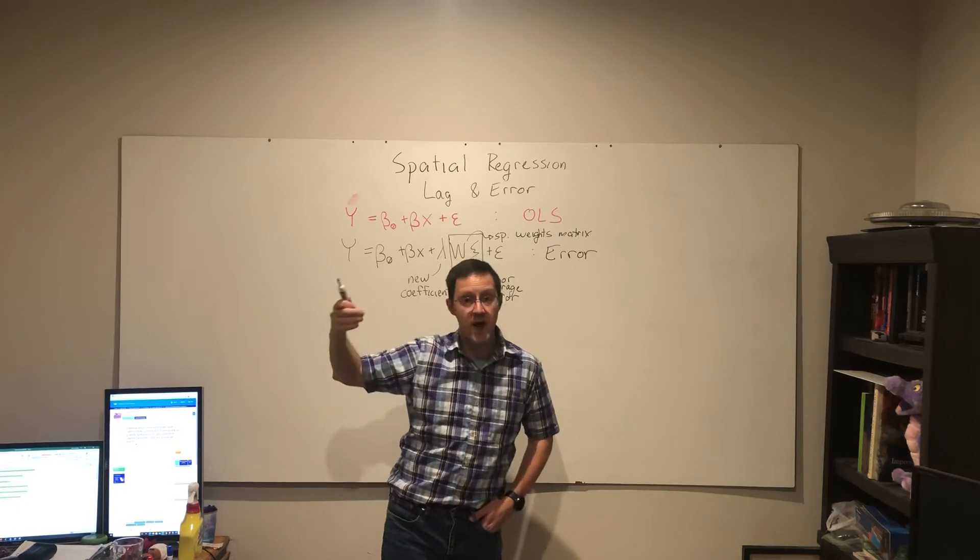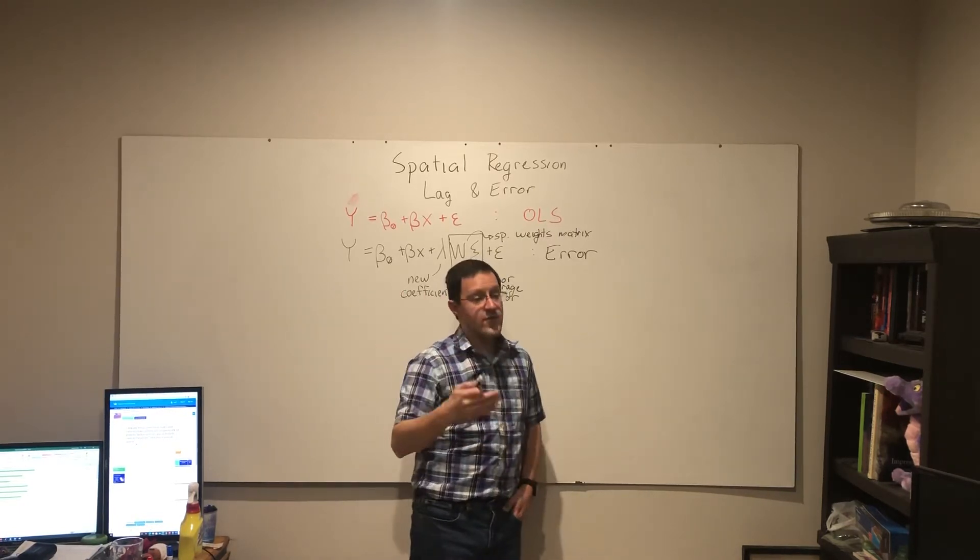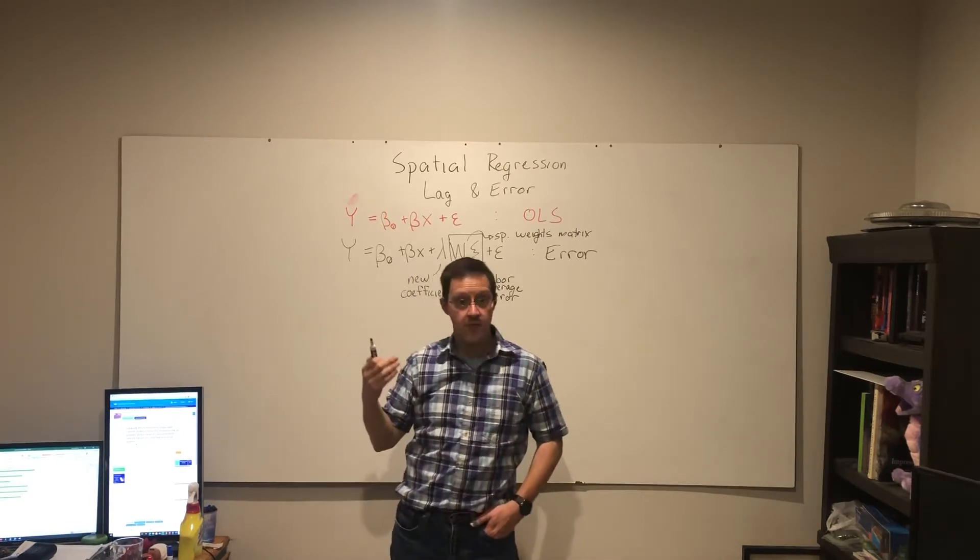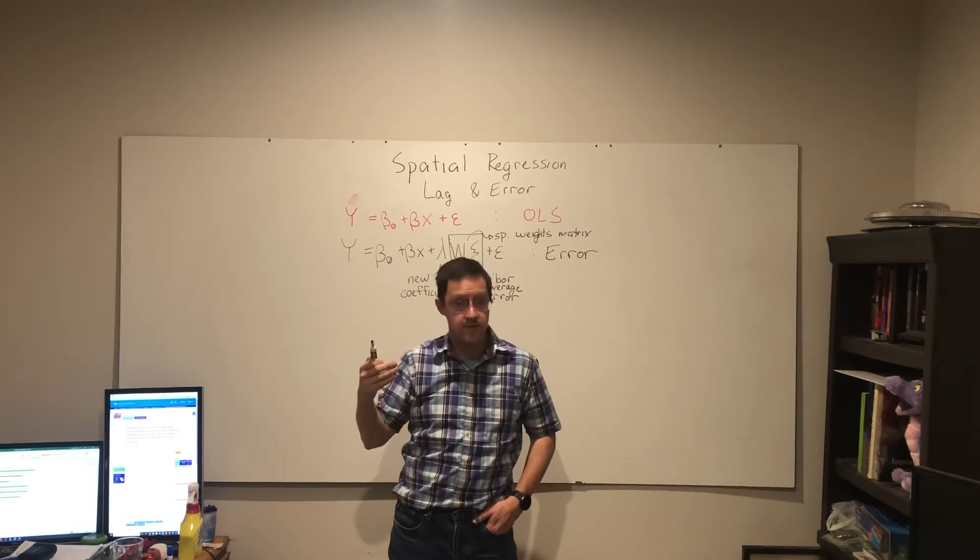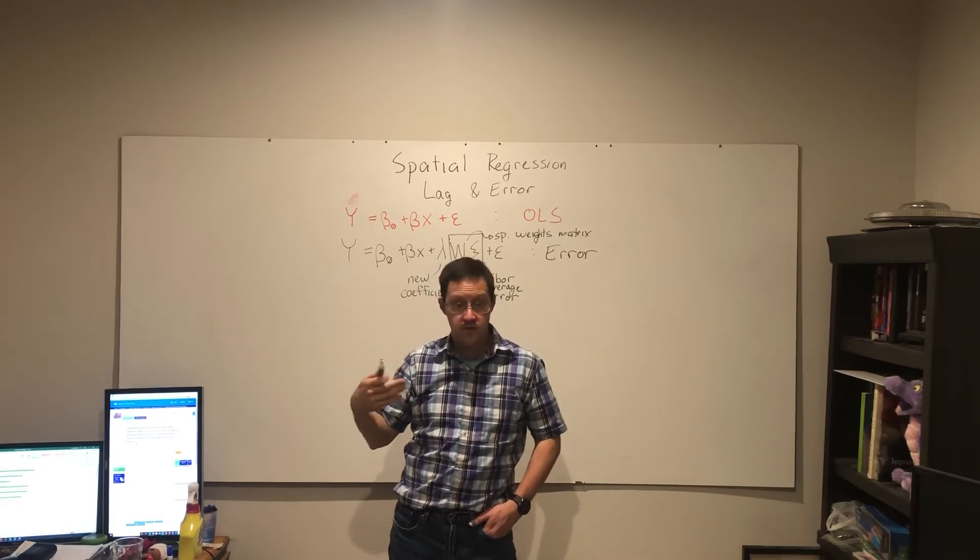To tell you how that relationship, that spatial error came into play. Was that a positive, significant relationship? If so, if we find a positive lambda coefficient that is significant, or a negative one, but again, the interpretation is more challenging.